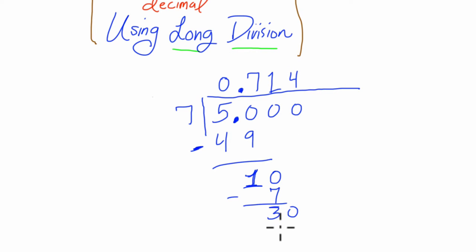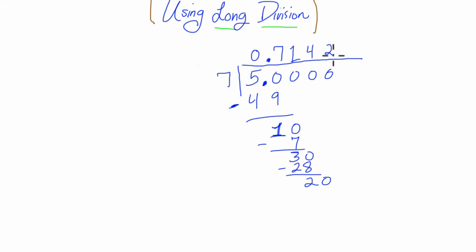7 goes into 30 four times, because 7 times 4 is 28. 30 minus 28 is 2, carry our zero here, and 7 goes into 20 two times. 7 times 2 is 14, and 20 minus 14 is 6, carry our zero here.